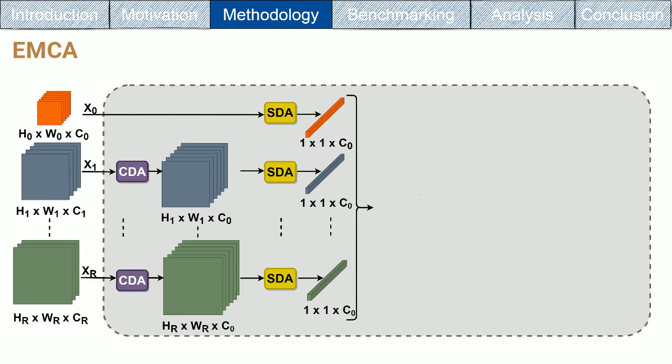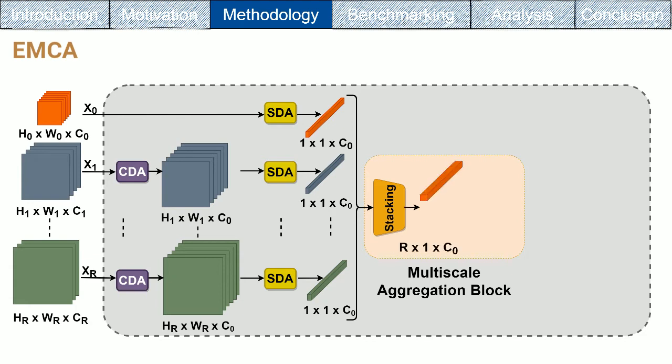After aligning the whole features, they are stacked together then fed to multi-scale aggregation block, termed MAB. To fully capture the multi-scale interactions in conjunction with the cross-channel interactions efficiently without involving a tremendous number of parameters,